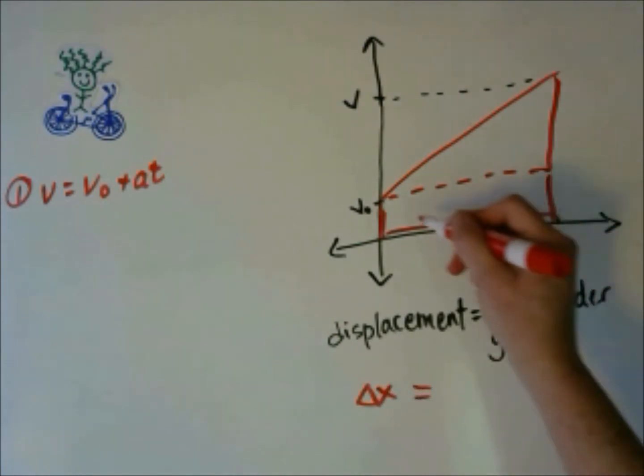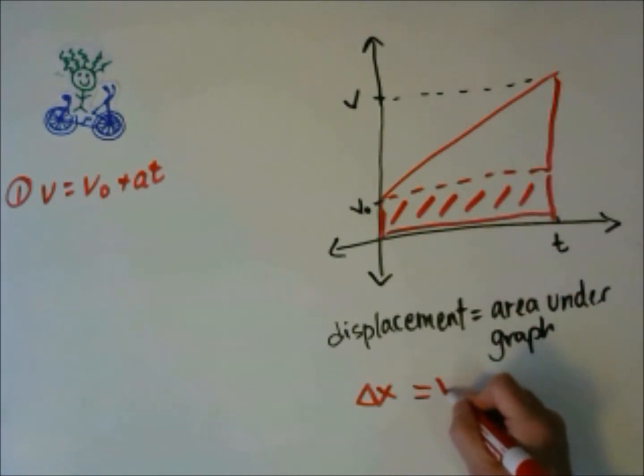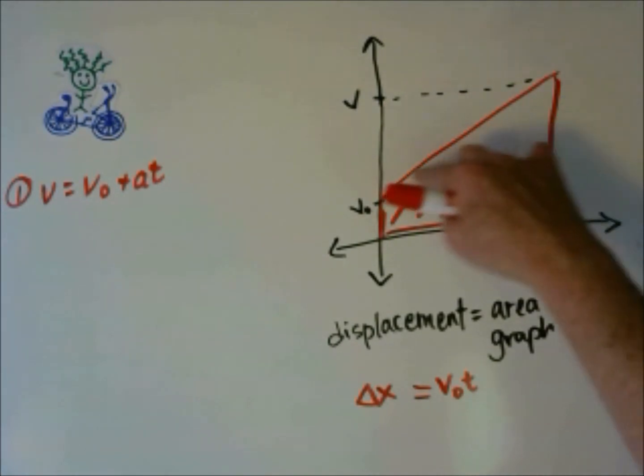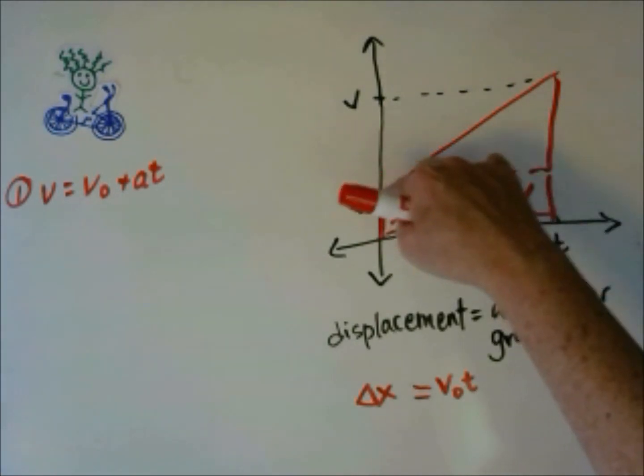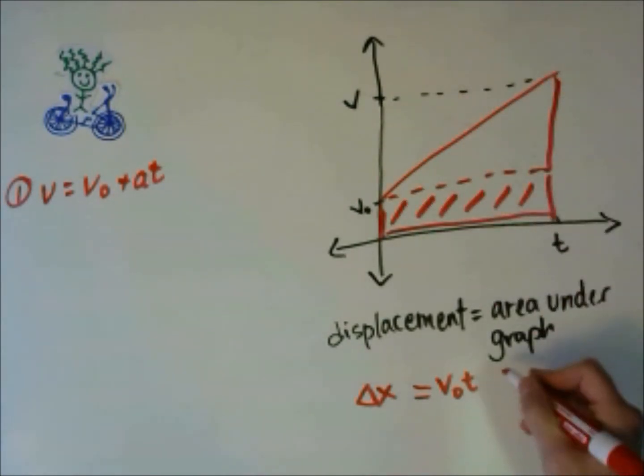The displacement is going to be the area under the graph, so displacement is our delta x. And that's going to equal this area, which is V0 times T, plus this area, which is a triangle. The base is T, the height is V minus V0, and it's going to be one half of that.